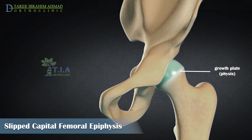The growth plate is made up of cartilage, which is a soft, flexible layer. It is a weaker area than the rest of the bone.